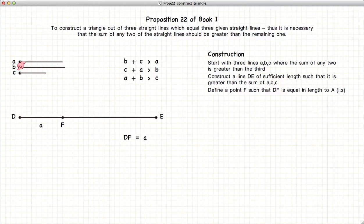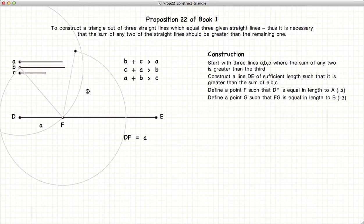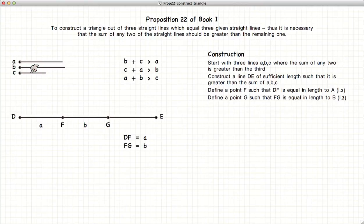Now we will copy B starting at the point F, again using the methods described in Proposition 3. And finally we will take C and draw it starting at the point G.